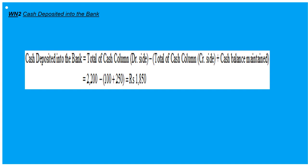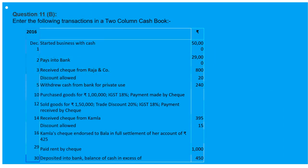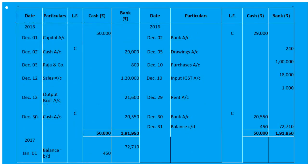Now let's read Question 11B. First, started business with cash 50,000 — entry on the debit side: 'To Capital Account' 50,000 under the cash column. On December 2nd, pays into bank — contra entry: 'To Cash Account / By Bank Account' with 29,000.